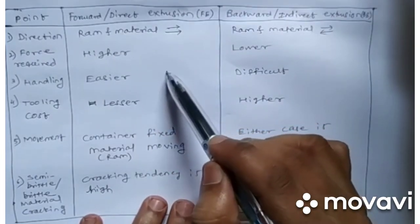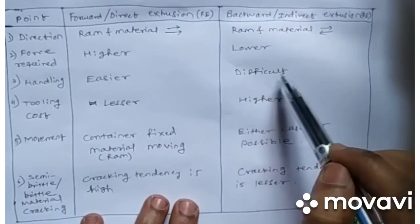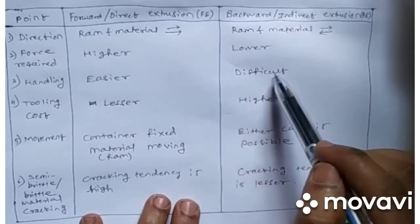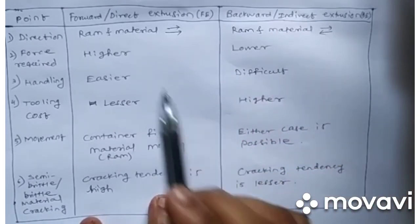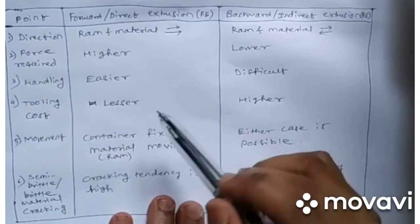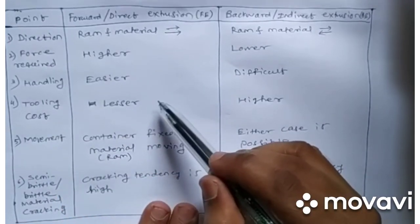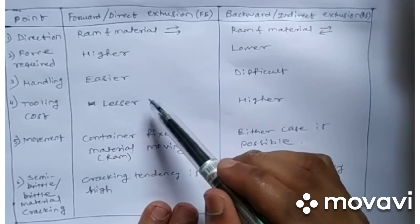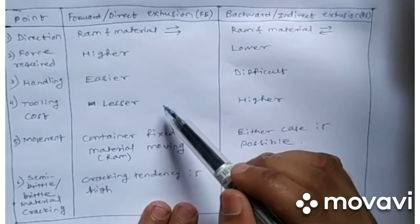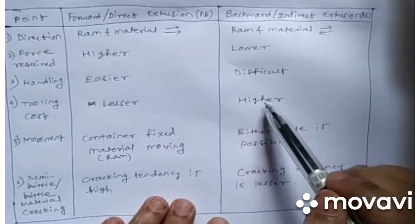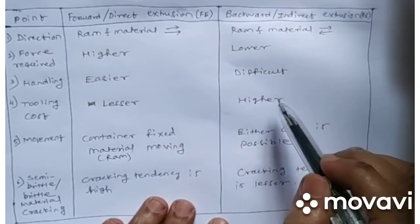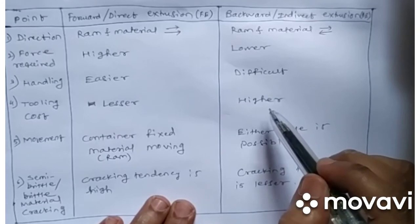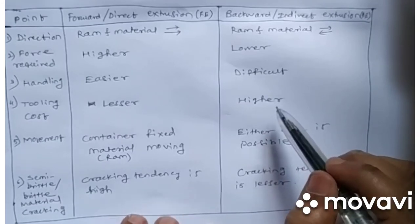Regarding material handling: in forward extrusion the product comes out from the front, so handling is easier. In backward extrusion the material exits through the ram's die cavity in the opposite direction, making handling more difficult. For tooling cost: in forward extrusion the ram is simple, but in backward extrusion the ram design is more complex since material exits through it, resulting in higher tooling cost.